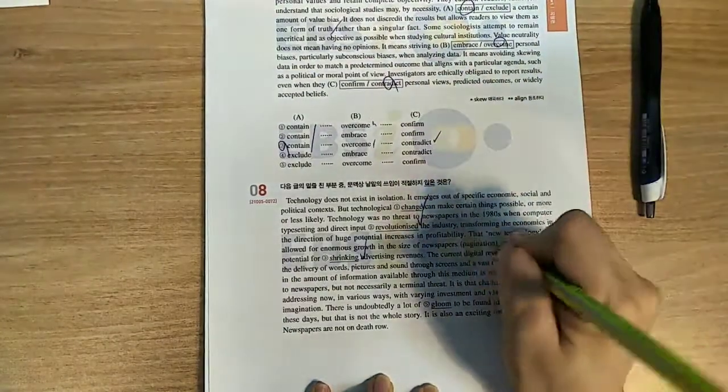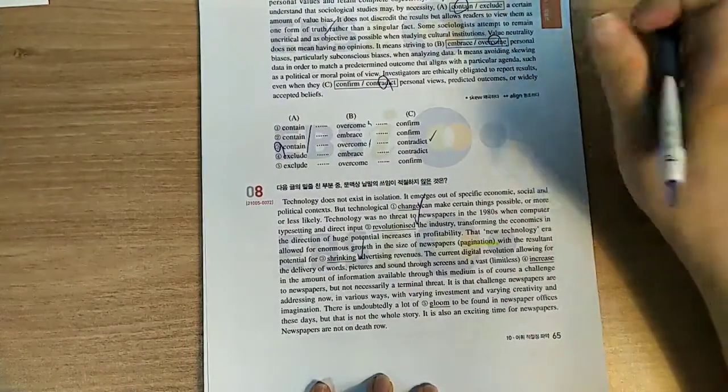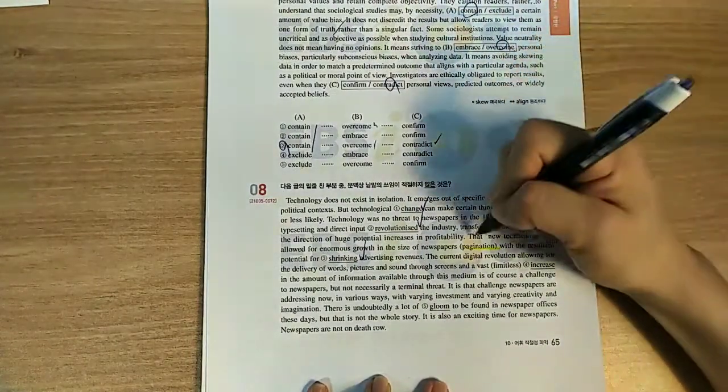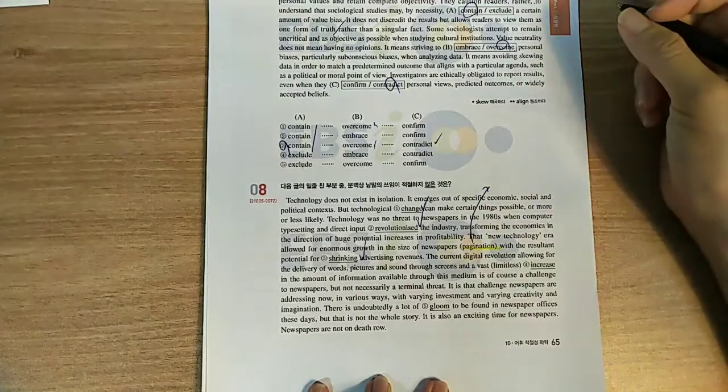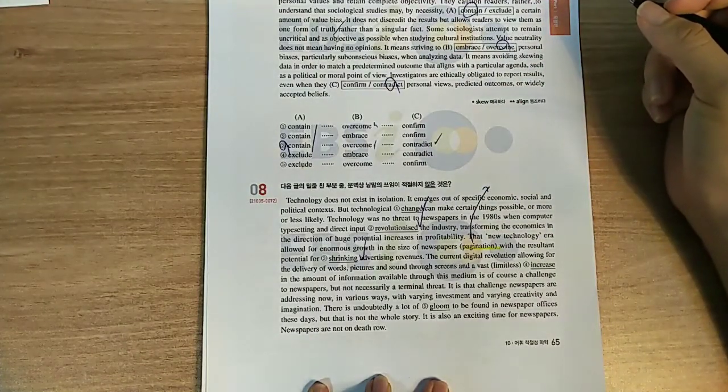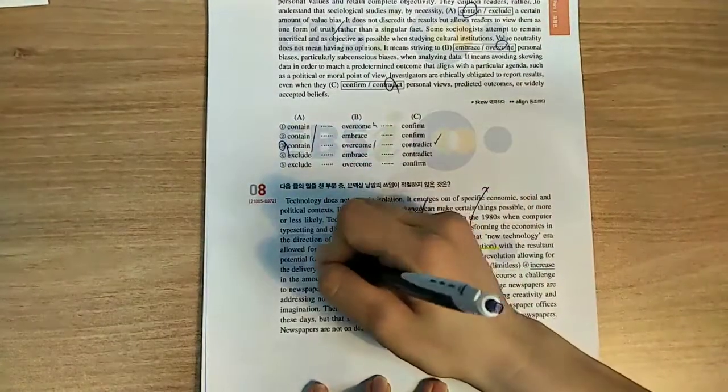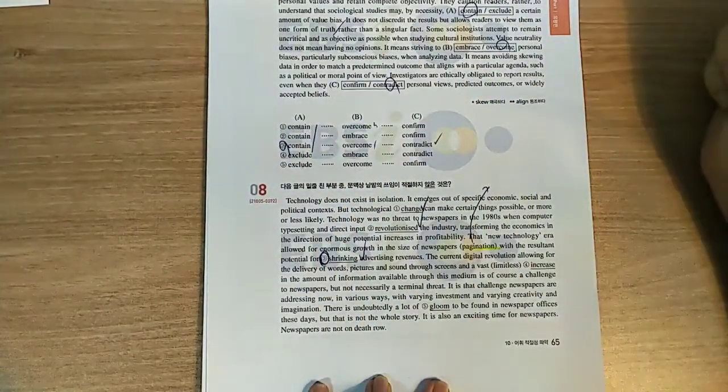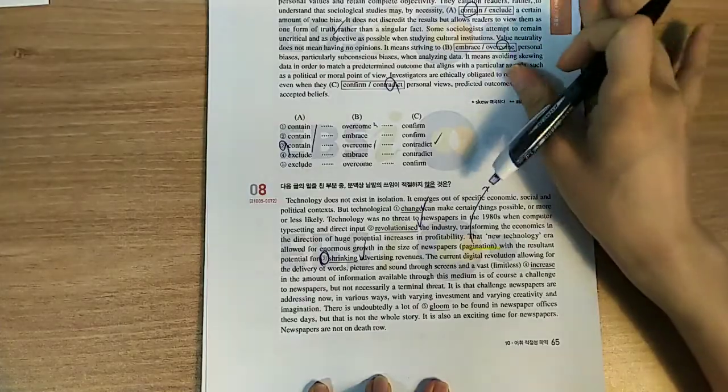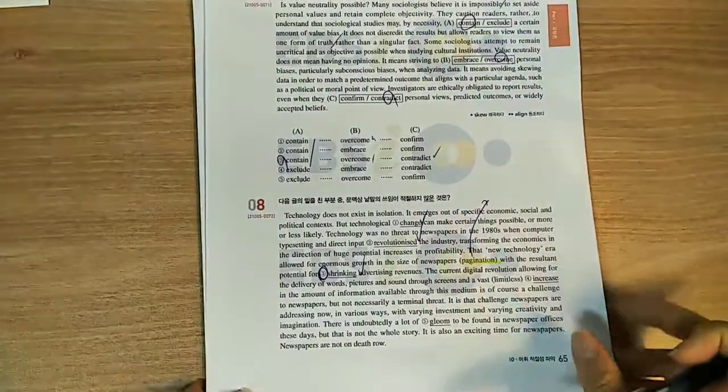So this is pagination. With the resultant potential for shrinking advertising revenues? 가 아니라 expanding revenues 가 아닐까요? Okay, there's some. 6, 7, 5, 6, 7, 8. 5, 6, 7, 8.